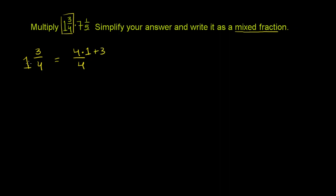And the reason why this makes sense is 1 is 4/4, or 1 is 4 times 1/4, right? 1 is the same thing as 4/4. And then you have 3 more fourths. So 4/4 plus 3/4 will give you 7/4. So that's the same thing as 1 and 3/4.